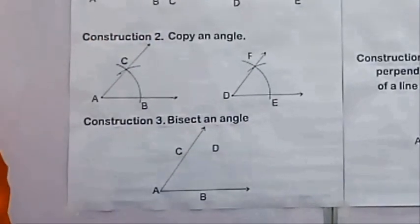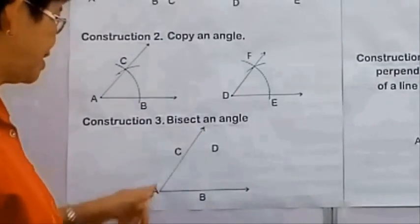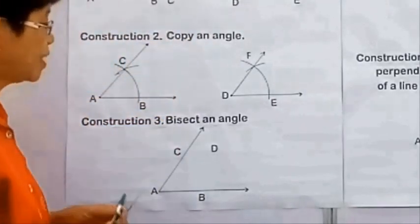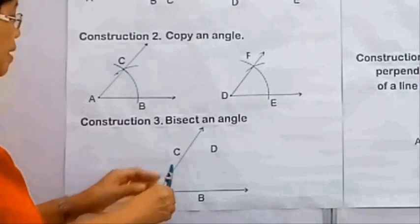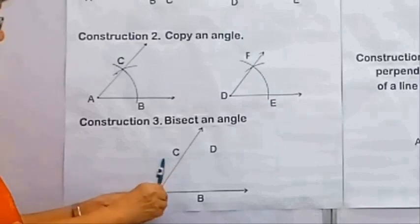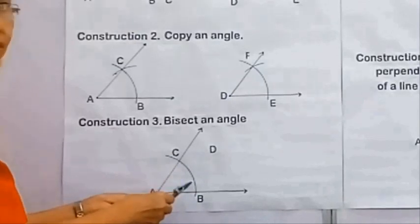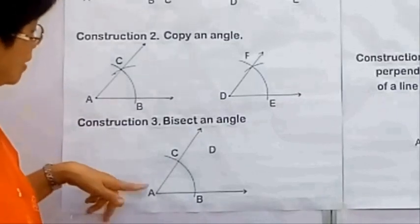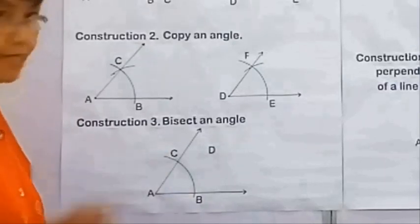Next is construction number 3: bisect an angle CAB. Given angle CAB, we will bisect the angle by first swinging an arc from point A. We adjust the opening of the compass, and the sides of the angle are intersected at B and C.